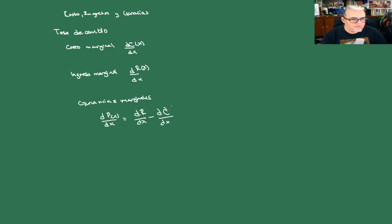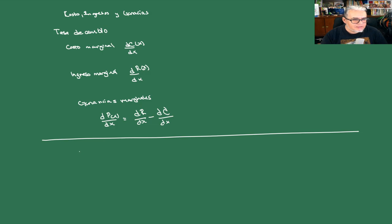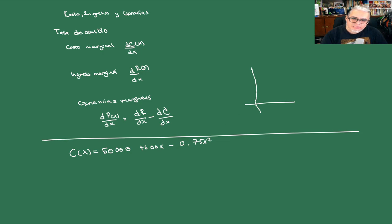Hagamos un ejemplo calculando costos marginales. Supongamos que hay una empresa que fabrica alguna parte automotriz y que tiene una función de costo C(x) = 50,000 + 600x − 0.75x². Acuérdense del dibujito que hicimos la vez pasada: si el costo se comporta de esta forma, su gráfica grosso modo es de esta manera. Cuando x = 0, esto pasa por 50,000.